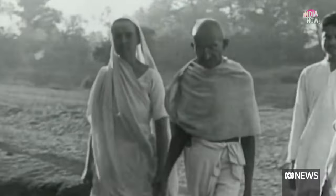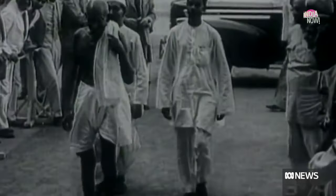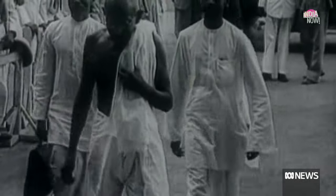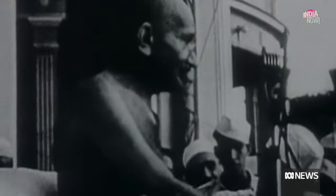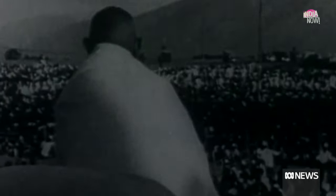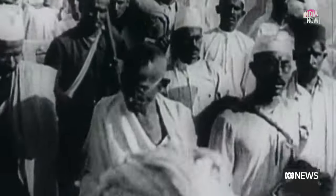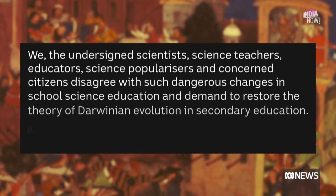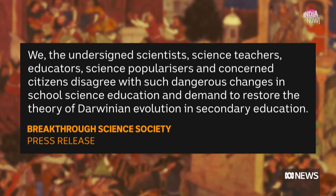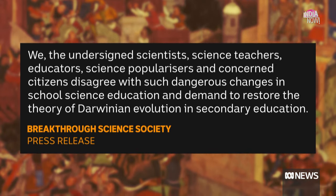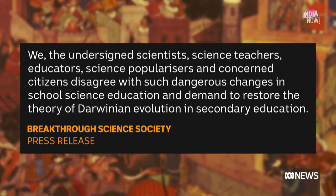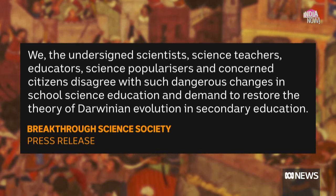Another thing that stood out was Gandhi's difficult relationship with Hindu extremists. References to how they hated his idea of a secular India — that India should be for Hindus and Muslims — have been dropped, while the extremists envisioned India as a country for Hindus only. As for evolution, more than 1,800 people from India's scientific community have demanded that the theory of evolution be reinstated in textbooks for years 9 and 10.